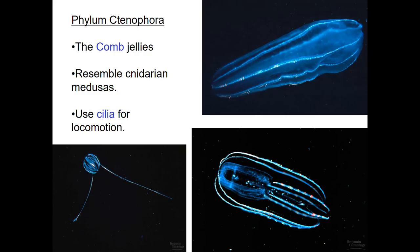Phylum Ctenophora — these are your comb jellies. These are really cool because if there's a bunch of them in an area and you disturb the water they're in, they'll actually light up and you can see it. They resemble cnidarian medusas, and they use cilia for locomotion. As you can see, these little comb-like structures coming off them are cilia.